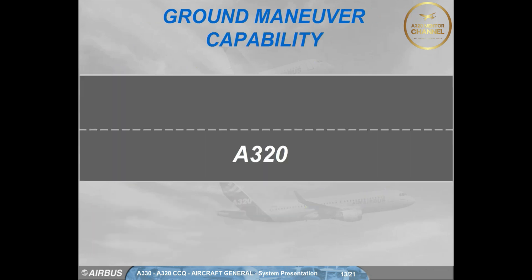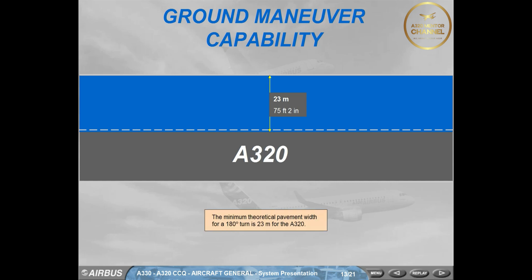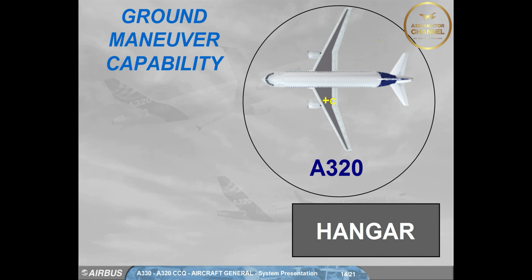The minimum theoretical pavement width for a 180-degree turn is 23 meters for the A320. For the A320, if the wing clears the obstacle, then the tail will also clear it as it is inside the radius of the wing.